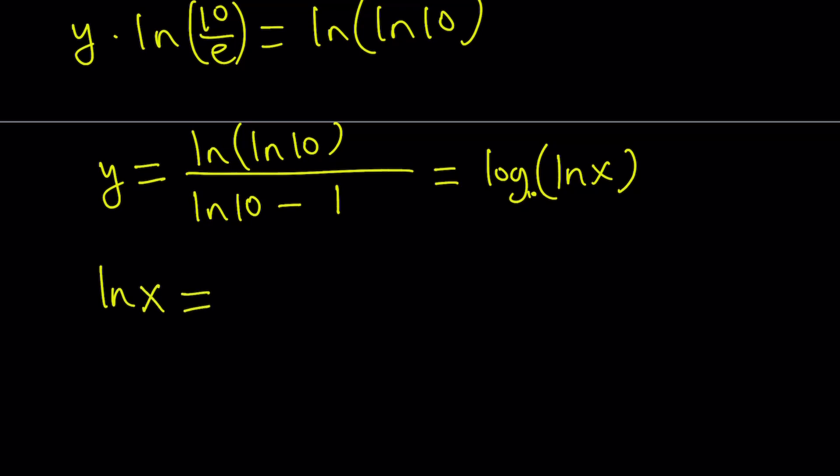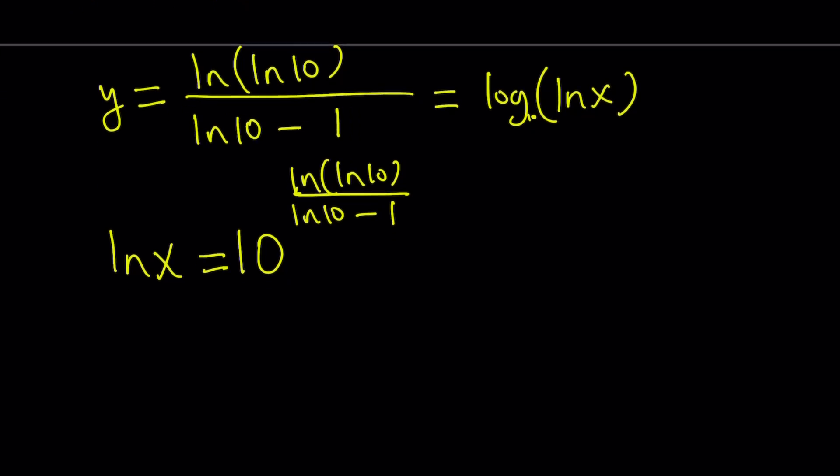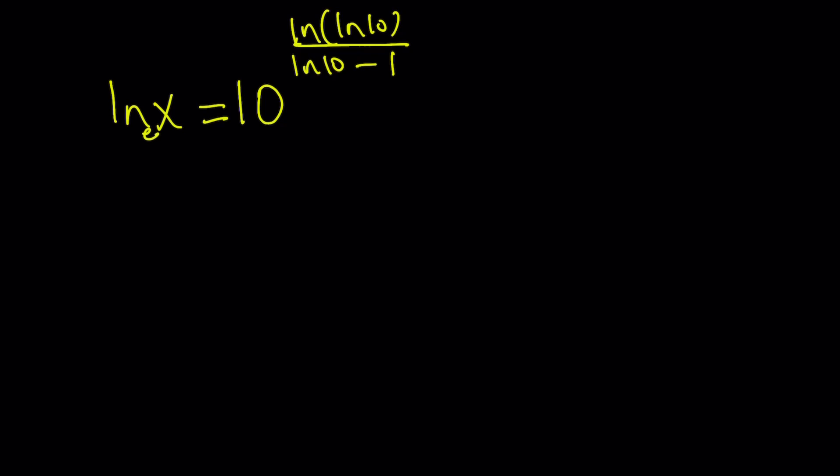So from here, ln x equals, and I probably need a little bit more room to be able to write that gigantic exponent. So ln x equals 10 to the power ln ln 10 divided by ln 10 minus 1. That expression on the left hand side. Great. So we got ln x, but we want to get x. So why don't we do e to the power both sides? And that's going to give us the value of x. Because the base is e. If you use the definition, you're going to get e to the power 10 to the power something for x. So x equals e to the power 10 to the power ln ln 10 divided by ln 10 minus 1.